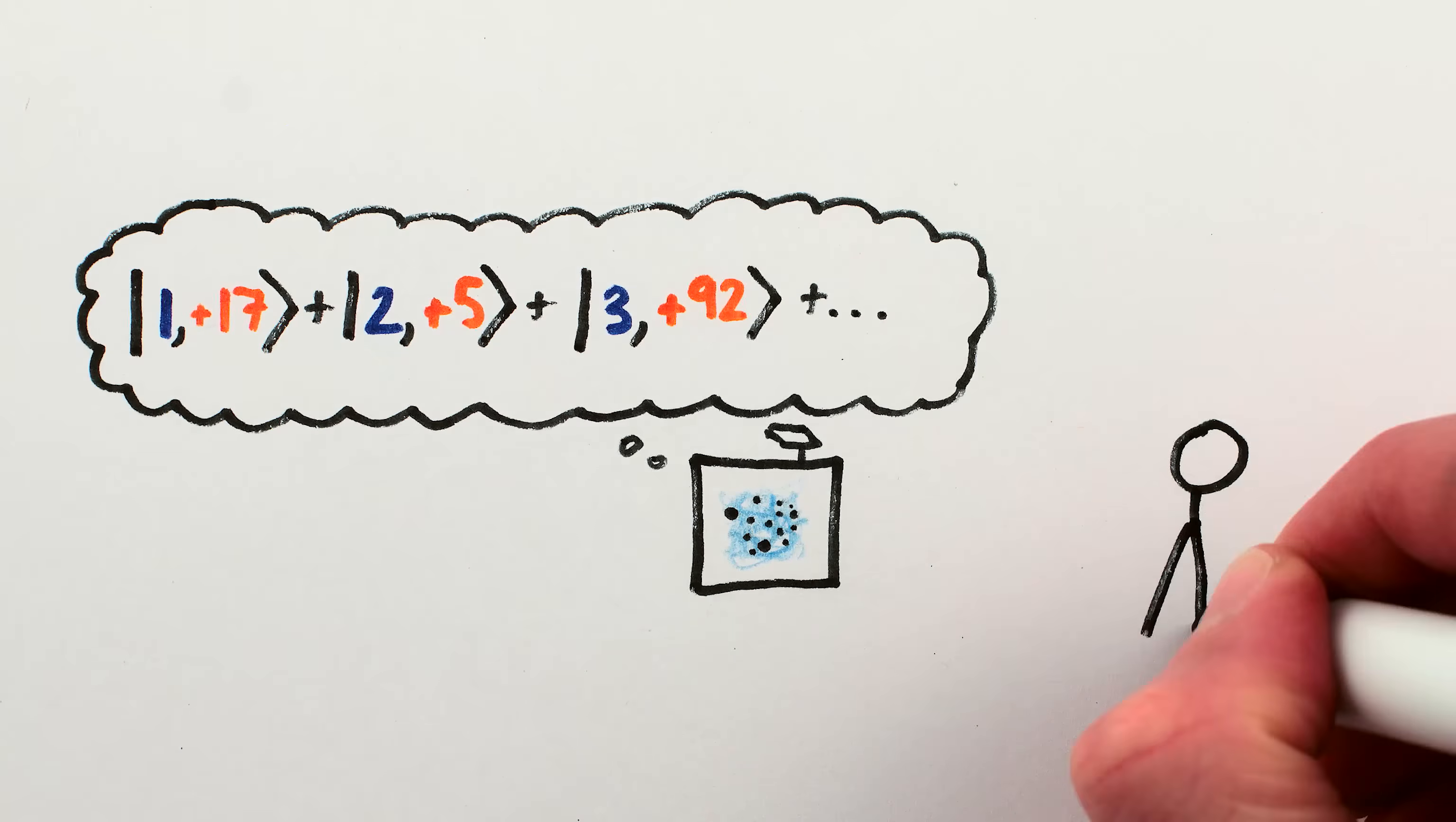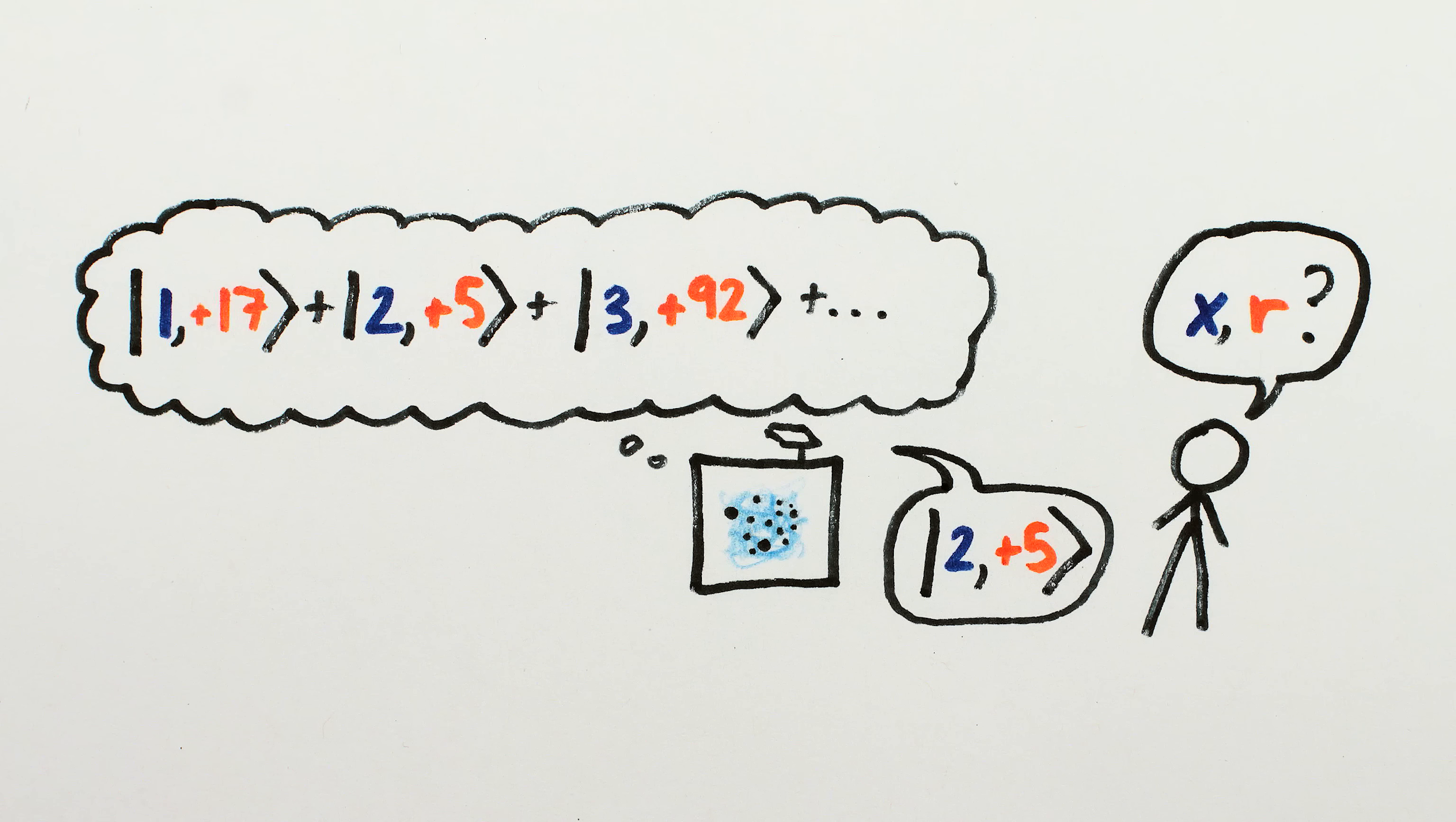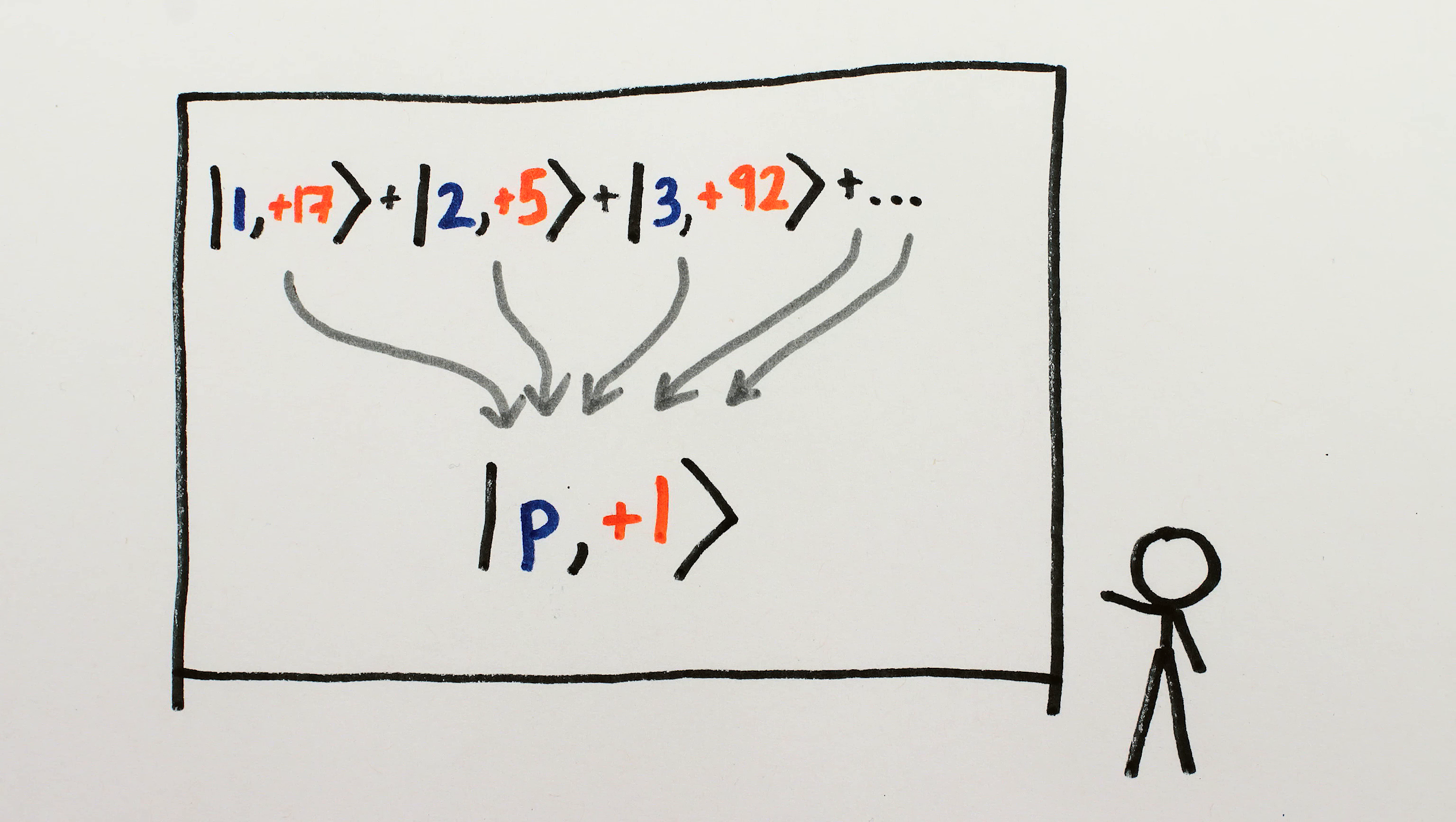We can't just measure this superposition to get the answer. If we did, we'd get a single random element of the superposition as output, like our guess squared is 5 more than a multiple of n, which is no better than just randomly guessing powers, which we can do with a normal computer. No, we need to do something clever to get all the non-P answers to destructively interfere and cancel out, leaving us with only one possible answer, P, which it turns out we can do based on another mathematical observation.